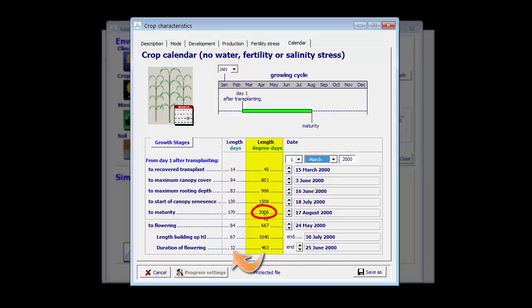my crop still requires 2006 growing degree days, but instead of 145 days, the time to reach maturity is now 170 days because March is colder than April.